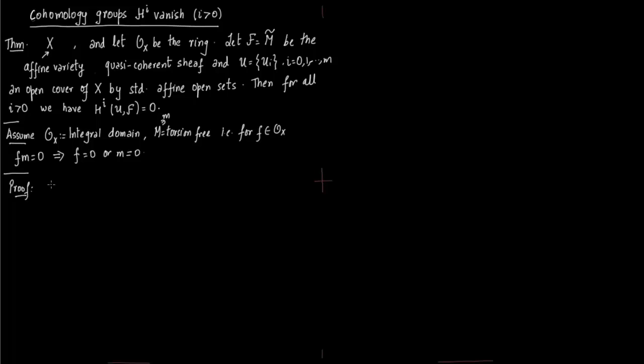For the proof we first start with the case i = 1. First of all we need to define these open numbers. Let's say u_i = u_fi where f_i is the element of the global section. Now let us recall how u_fi looks like. You fix the space X. Now you have a polynomial f_i which I am drawing in rust color. It cuts the affine variety X in say 4 places. Then u_fi is nothing but the set X minus those 4 points where the polynomial f_i = 0 vanishes.